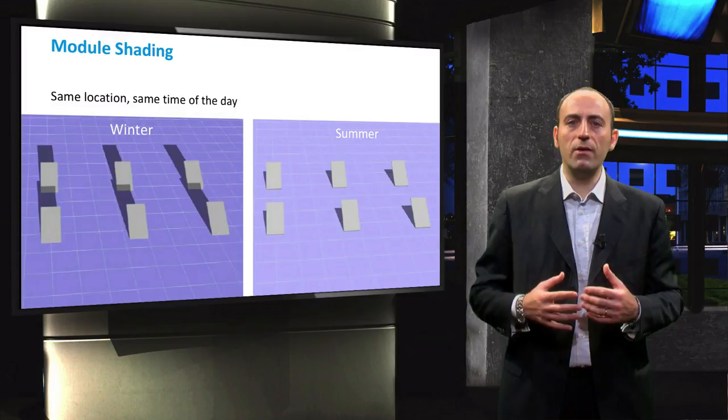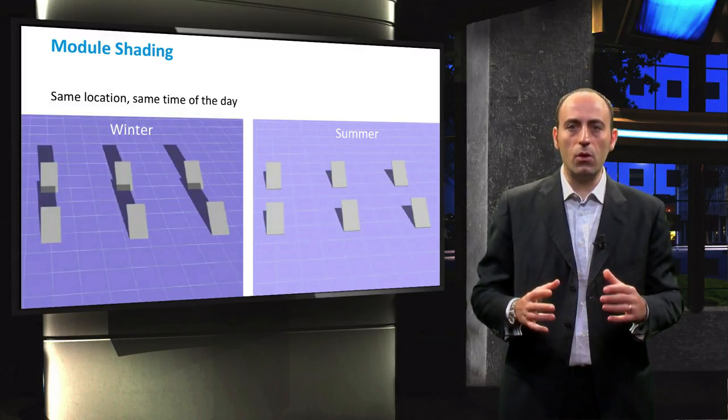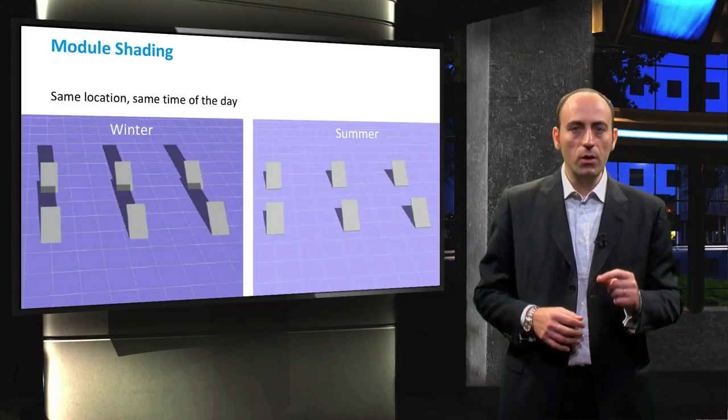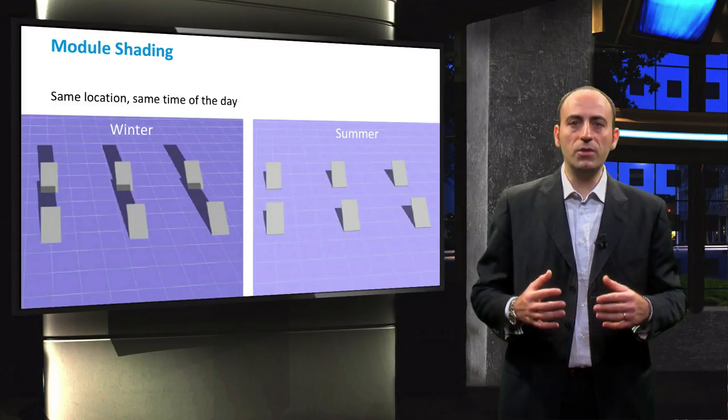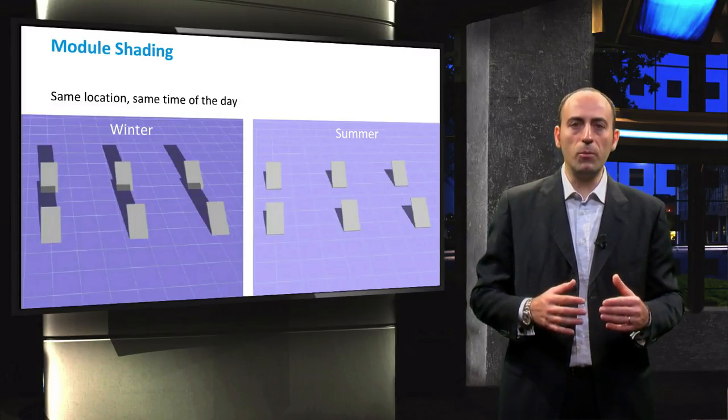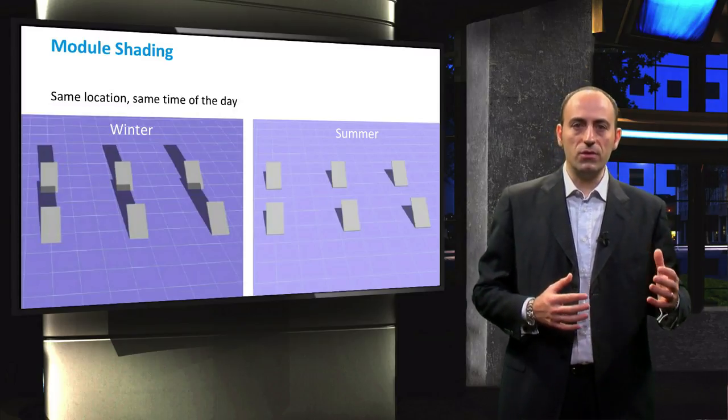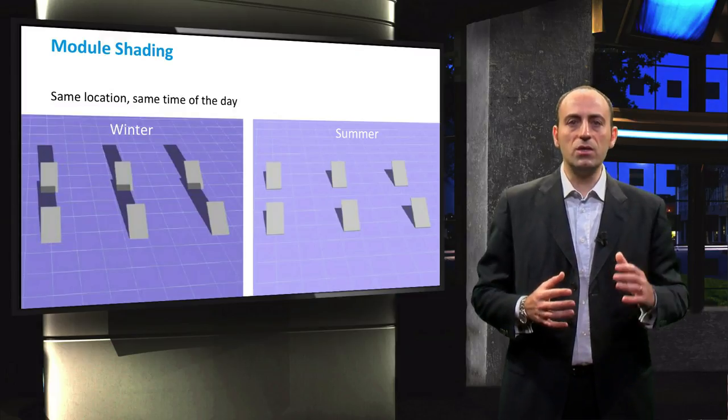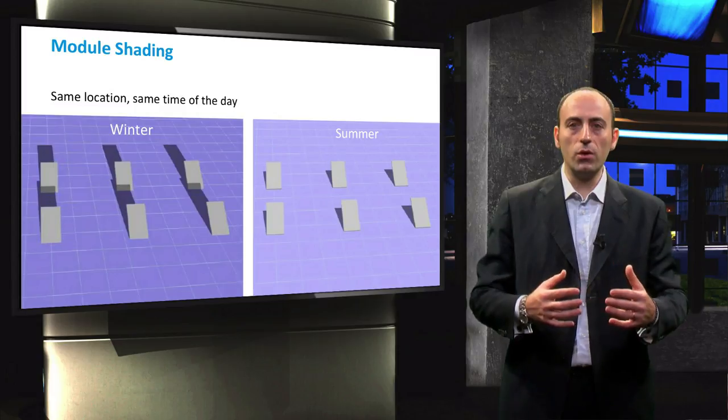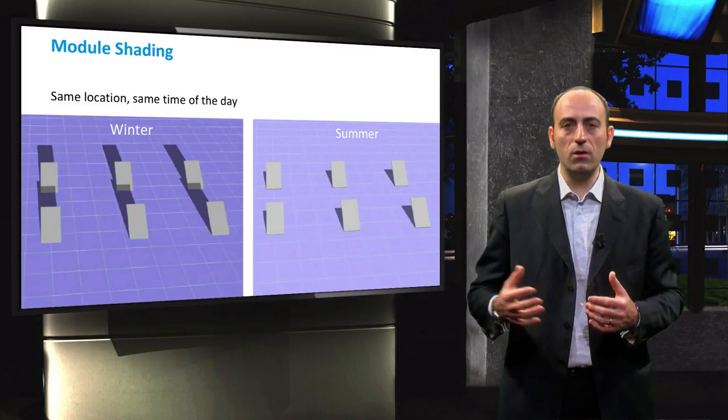These two representations are an example of the same PV system composed by two rows of identical modules with identical tilting angle and position. The only difference is that they were obtained by simulating the sun position in two different and opposite periods of the year, winter and summer. In winter, on the left-hand side, the position of the sun is low on the horizon and thus the shadow cast is much longer compared to a typical day of summer as the one simulated on the right-hand side.